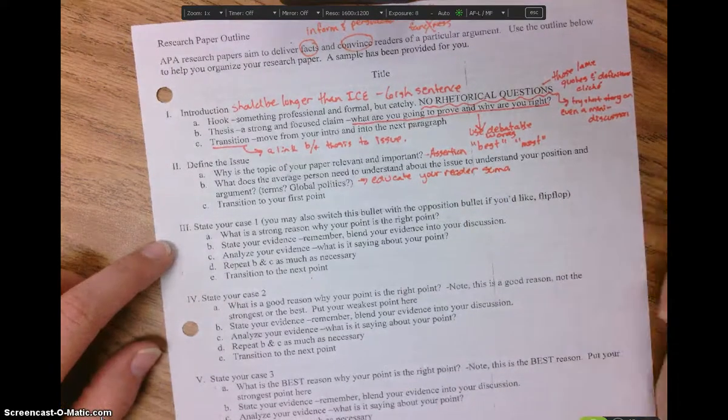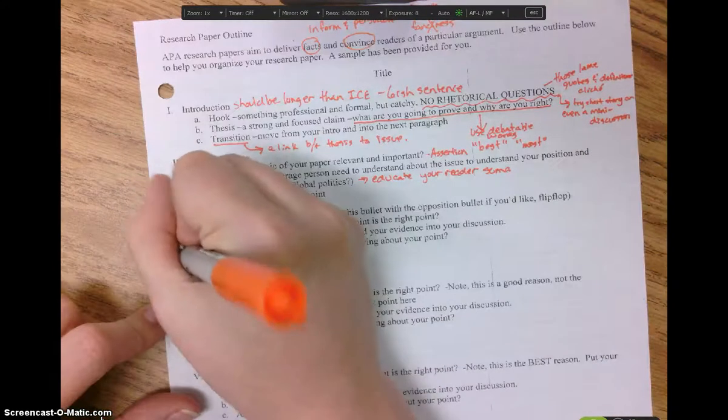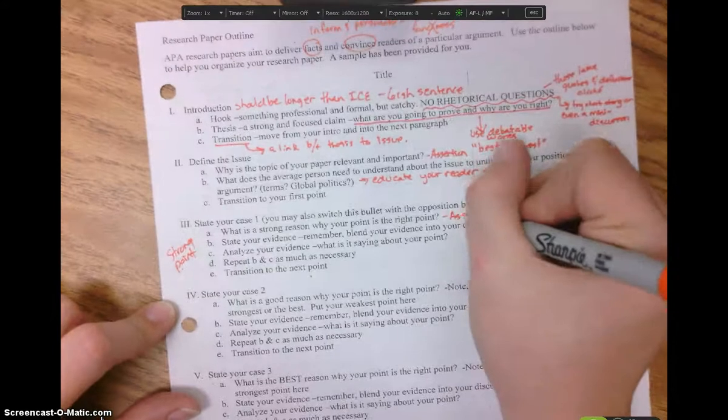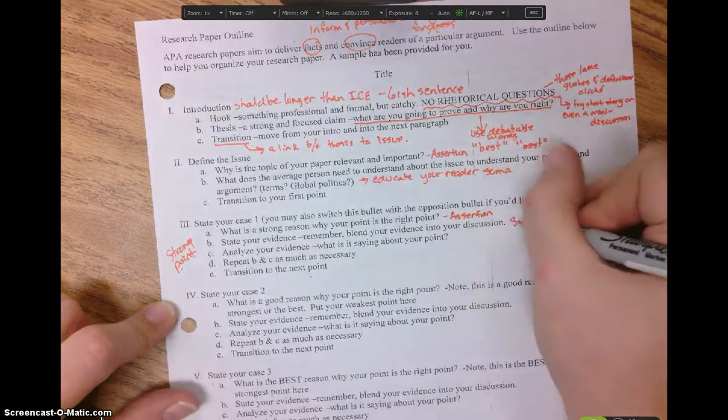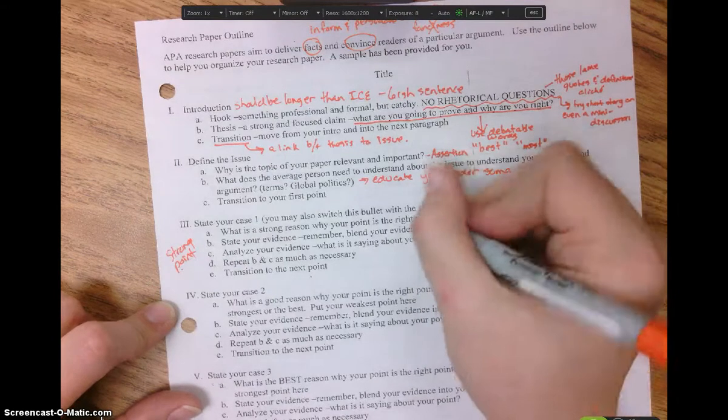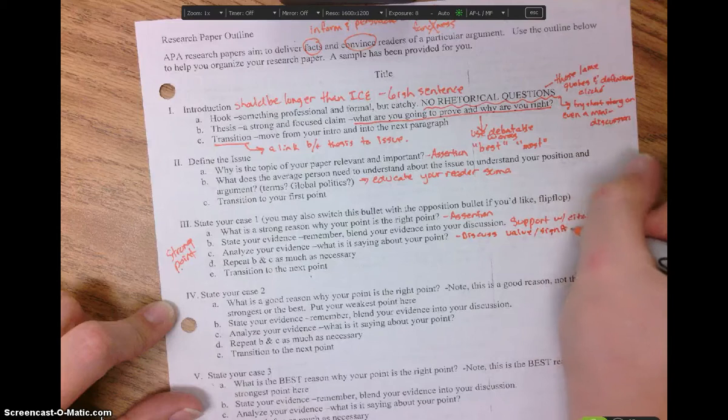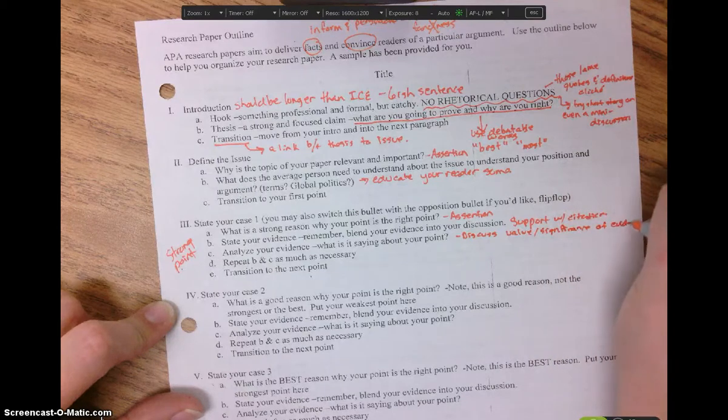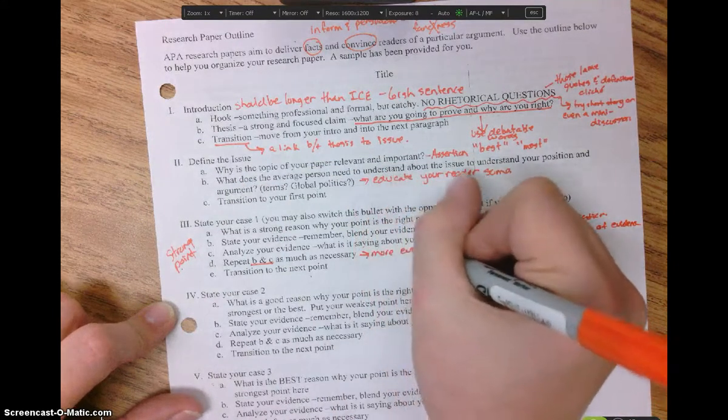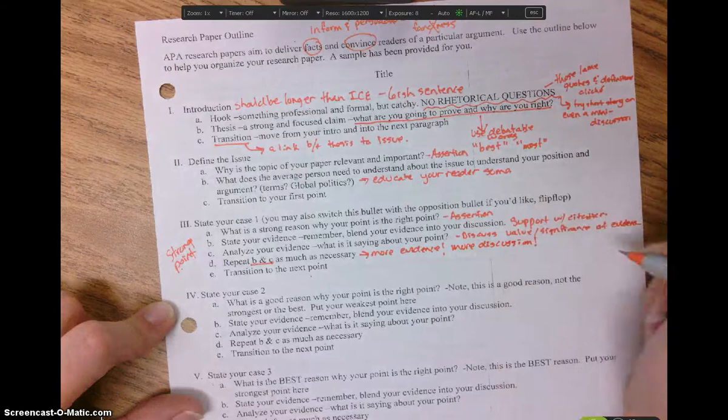And your number three here state your case, point one. This is going to be a strong statement. You have a strong point. It needs to start with this assertion. You need to support your assertion with citations. You need to discuss the value of your evidence, value or significance. And then you need to repeat, like rinse and repeat as much as necessary. You always need more evidence. You want more evidence and more discussion. You should never be including evidence without also discussing why that evidence is valid or important.